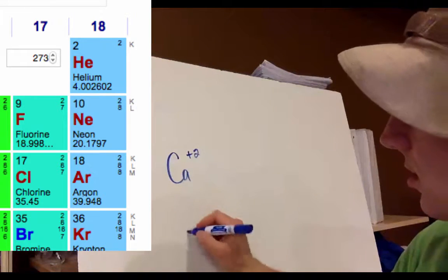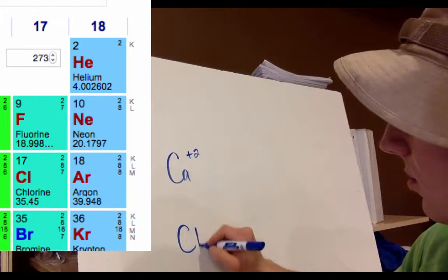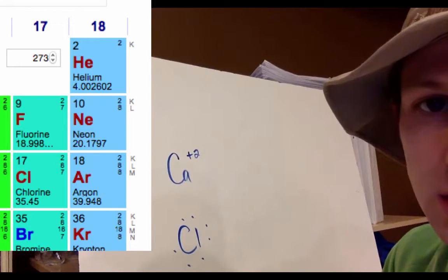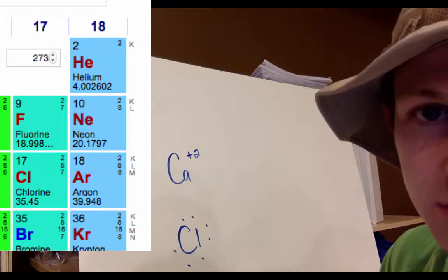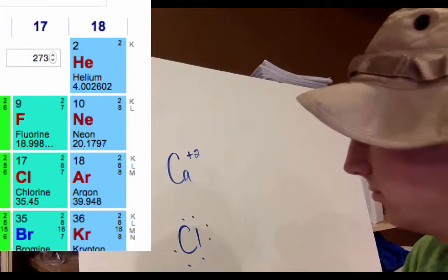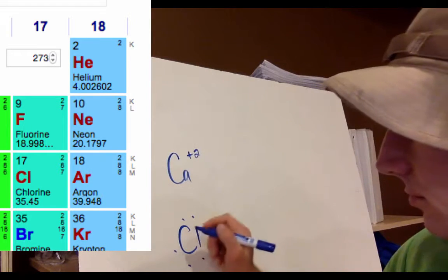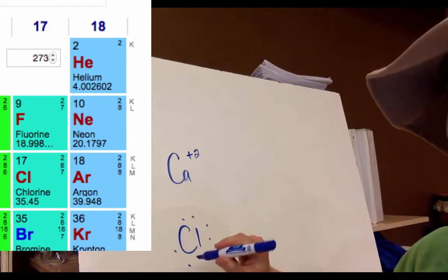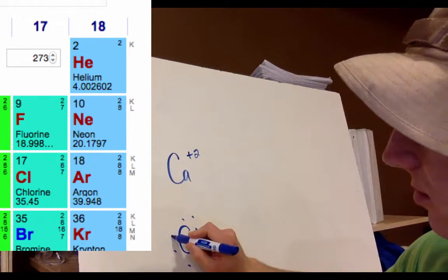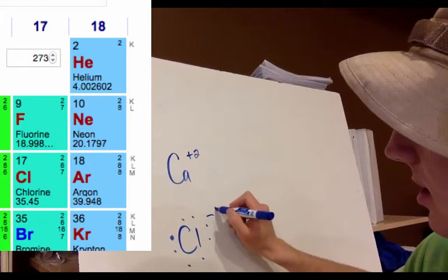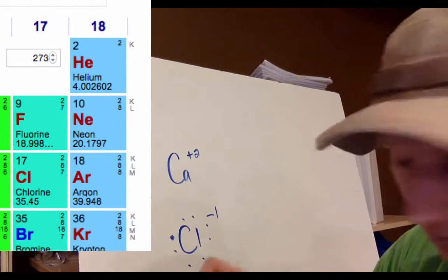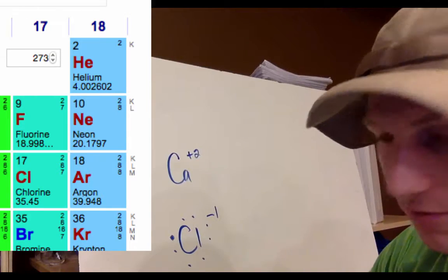Now do the Lewis dot structure for chlorine. Chlorine right now has one, two, three, four, five, six, seven electrons — pause the video and draw the ion. Coming back: chlorine would pick up one electron, becoming a negative one charge — Cl⁻.